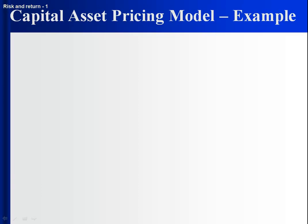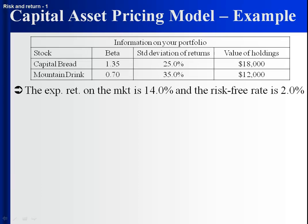Let's take a look at an example to see how to apply the CAPM. We've got a portfolio with two stocks: Capital Bread and Mountain Drink. Capital Bread has a beta of 1.35, standard deviation of returns of 25%, and the value of our holdings is $18,000. Mountain Drink has a beta of 0.70, standard deviation of returns of 35%, and we hold $12,000 worth. The expected return on the market is 14%, and the risk-free rate is 2%.